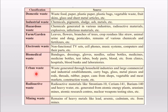Urban waste is generated in households in urban areas and can include carry bags, metal pieces, and glasses that we throw away. Then we have radioactive waste, which comes from radioactive substances used in atomic research or nuclear weapon testing. Next is mining waste — these are heavy metals. During mining, if someone is mining for a particular substance and other substances are also found, those discarded substances come under mining waste.